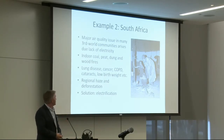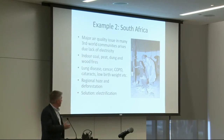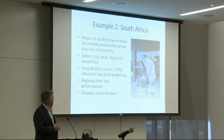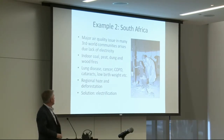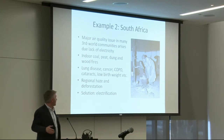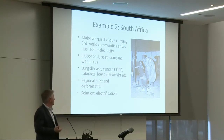Another example from a very different part of the world is South Africa. For a lot of rural areas in the third world, the big air pollution issue is indoor air pollution — reliance on indoor coal, wood, and dung fires for heating and lighting causes a huge burden on public health: lung disease, cancer, COPD, cataracts, low birth weight, and also regional haze and local deforestation. The solution for people in that situation is the same as it was in early Ontario and the U.S. — electrification: building power plants, getting the lines out, getting people to adopt electrical appliances.